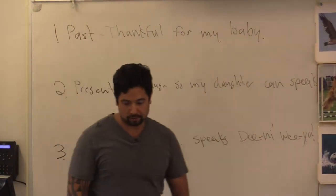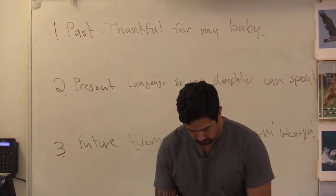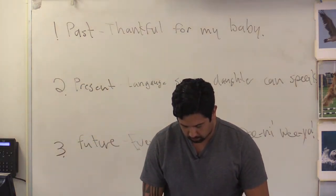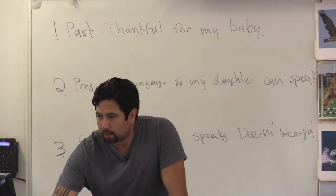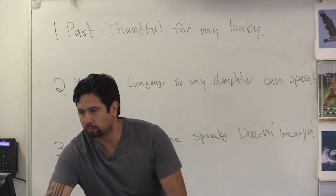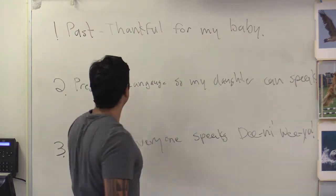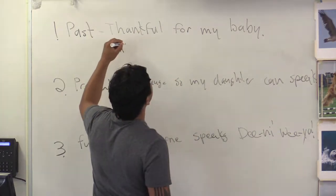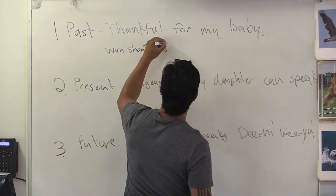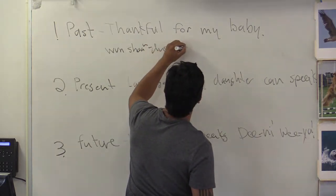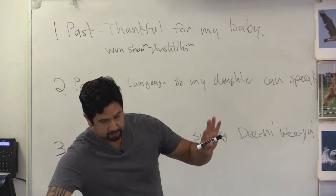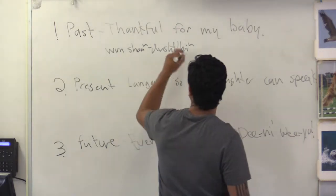So we're going to go through 'thankful' — appreciation or thankful. Okay, 'I'm thankful': one, Sean, Dush, E. Now we're going to go to 'for.' I think 'one' is included — it happens to be included in this. That's why sometimes we've got to do this one, it's a longer one, but it's going to be 'one' again.